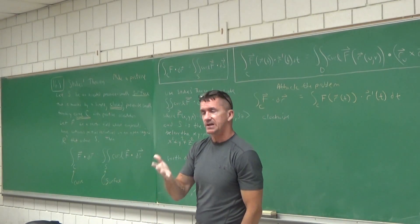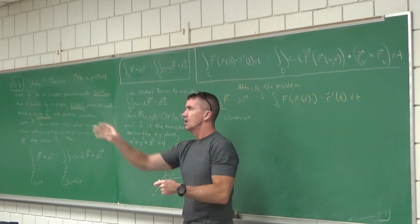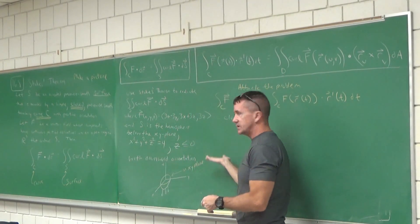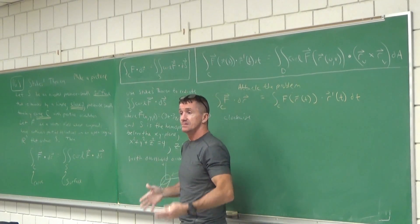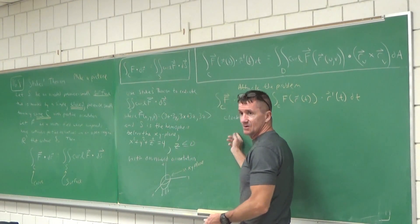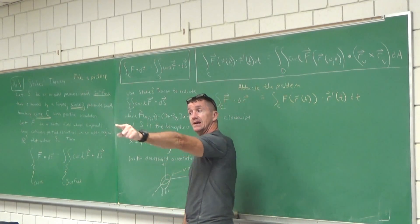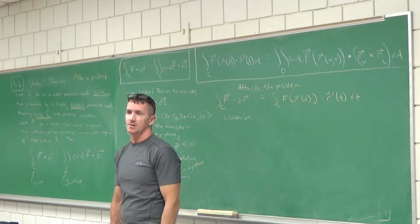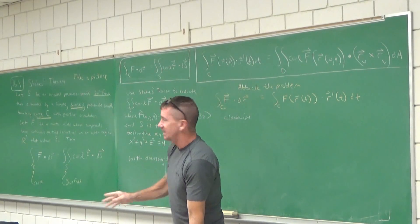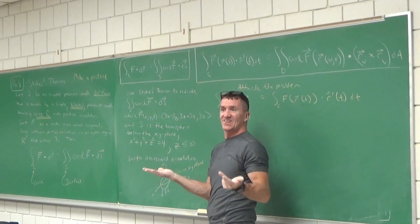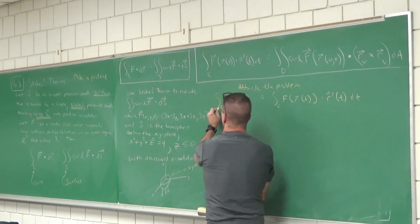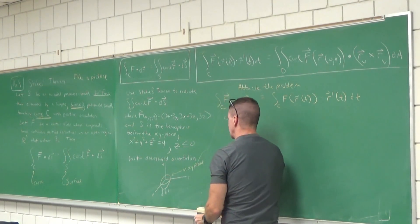For counterclockwise orientation, I would do cosine for the X component and sine for the Y component. But we're going to have clockwise orientation on this curve as viewed from above. So when we parametrize that curve, let's put sine T on the X component and cosine T on the Y component. Or if you prefer, just keep it cosine, sine every time and in the end just put a negative out in front — it'd be the same thing. The main focus is all about that curve C.